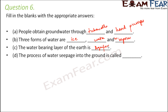The process of water seeping into the ground is called infiltration. Water passes through the pores between soil particles and the spaces between rocks, seeping downward to form groundwater. Because water passes through these spaces into the ground, this process is called infiltration.